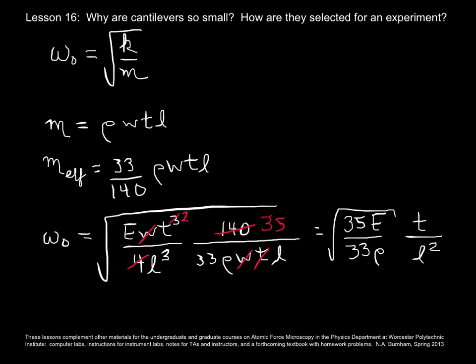So this means that after you've made your selection of materials, which determines your modulus over density, then if you want a high resonant frequency, you would want a thicker cantilever that is short. And because we want the cantilever to have a resonant frequency at least in the kilohertz range, so as to be very different from building vibrations, this is why cantilevers are so small.